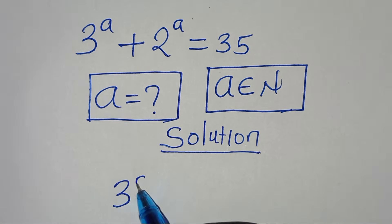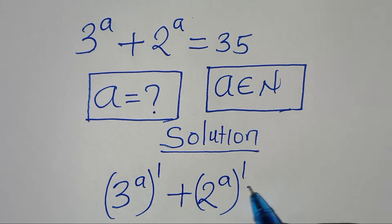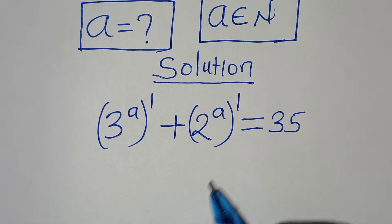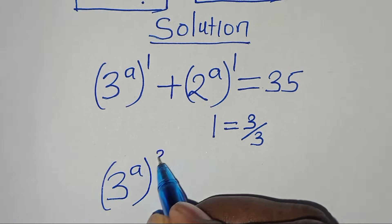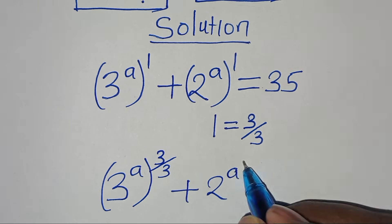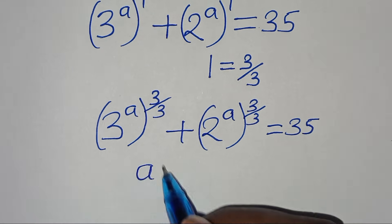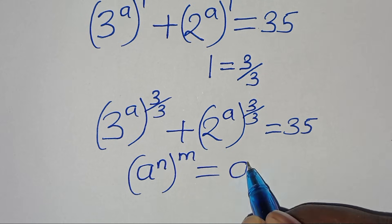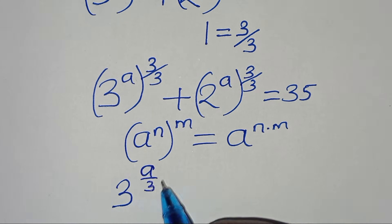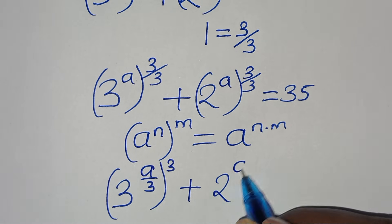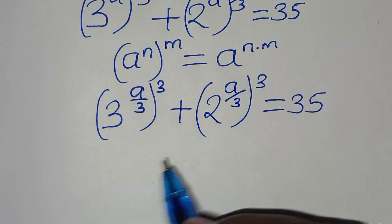We can express 3^a as 3^a · 3^(1/1), then rewrite 1 as 3 over 3. So we have 3^a · 3^(3/3) plus 2^a · 2^(3/3) equal to 35. Using the exponent rule (a^n)^m = a^(n·m), this simplifies to 3^(a/3) cubed plus 2^(a/3) cubed equal to 35.